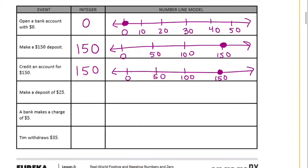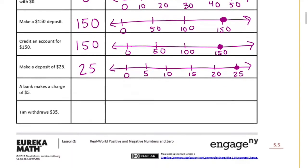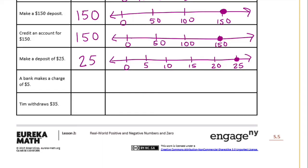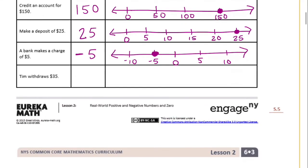Then the next week he made a deposit of $25. So he adds $25, so we can draw that, $25. So he adds $25 to it. Then a bank makes a charge of $5. So this time the bank charges him $5. Instead of adding $25 they're taking out $5, so this is going to be negative 5. So if we were to plot negative 5, I'm going to put negative 5. And then Tim withdraws $35, so he takes out $35. So that's another negative $35 out of his account.